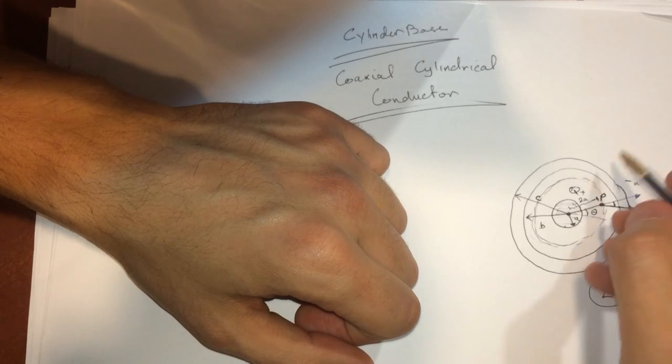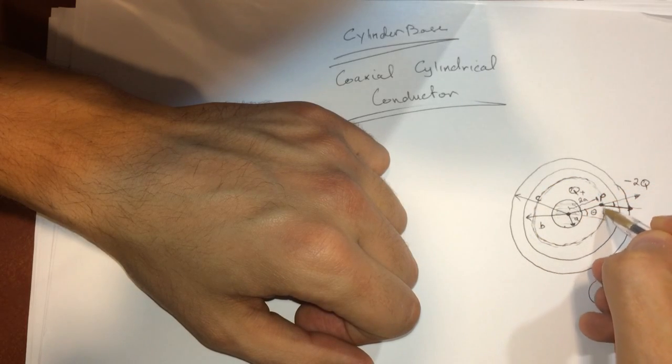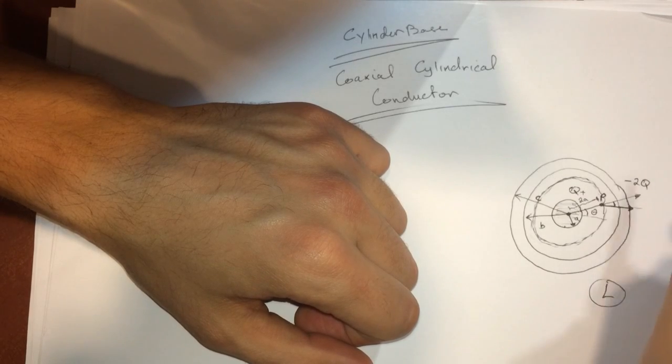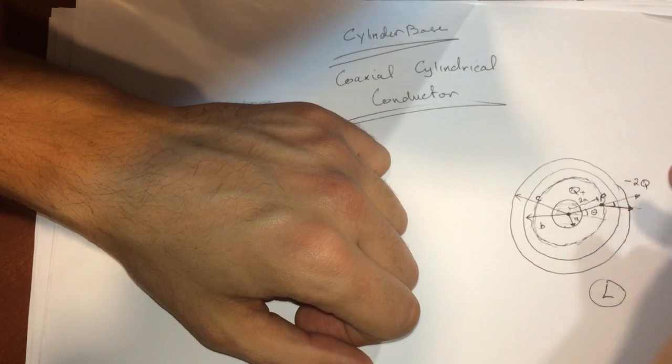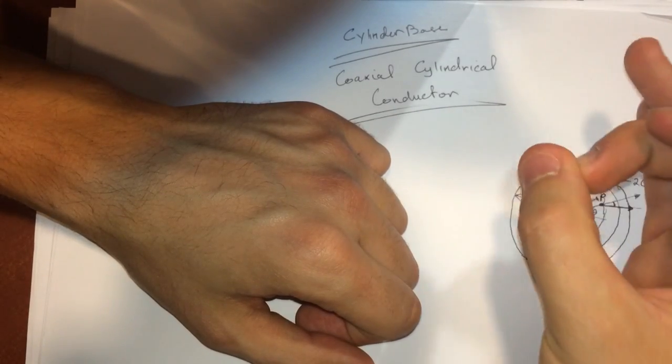Let's draw the Gaussian surface because the electric field will be the same at any point over the cylindrical Gaussian surface. My Gaussian surface is a cylinder here.